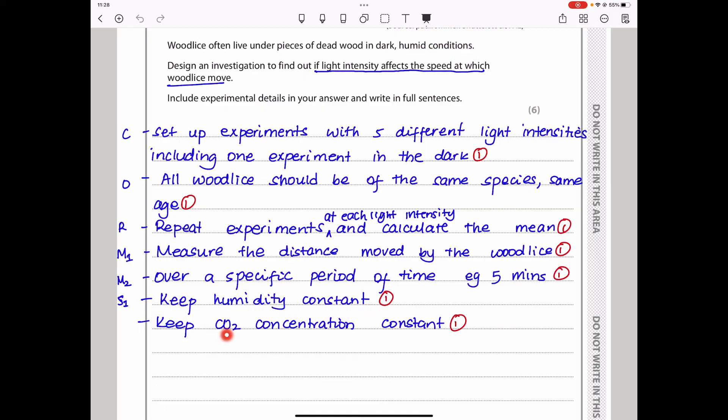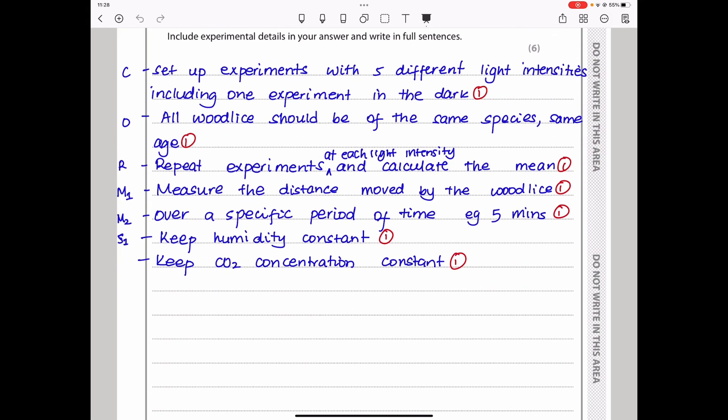S1 and S2 are going to be standards you have to keep constant. Since these woodlice live in humid conditions, we have to ensure that humidity is constant. The carbon dioxide concentration has to be constant because since you're measuring the way they move, CO2 concentration, if it's really high, it could affect how they move. You could even talk about the oxygen concentration and so on to ensure that they are exposed to the same conditions. This brings us to the end of this part 3 of the paper as well as the whole paper.